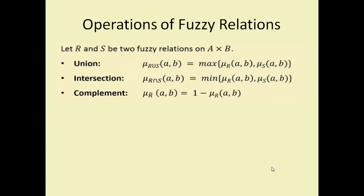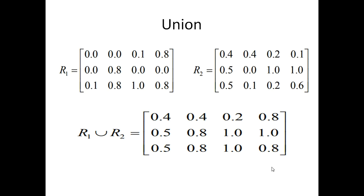Different operations we can perform on fuzzy relations are union, intersection, and complement. For union, we find the maximum of their membership values. For intersection, we find the minimum. For complement, it is one minus the membership value. For union, given R1 and R2 as two relations, the resulting matrix takes the maximum value at each position — for example, max gives 0.4, 0.4, 0.4, 0.4, 0.2, 0.2, 0.8, 0.8, etc.